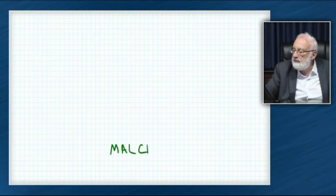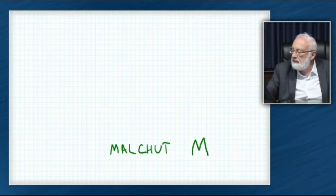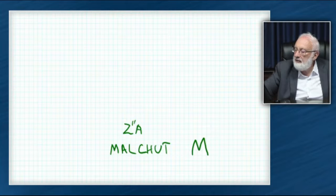We have the degree of malchut. Here we have zarampin, and the degree of bina.